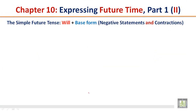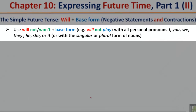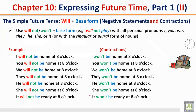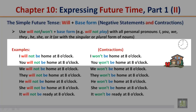The simple future tense: will plus base form — negative statements and contractions. Use 'will not' or 'won't' plus the base form with all personal pronouns: I, you, we, they, he, she, or it, or with the singular or plural form of nouns. Examples: I will not be home at 8 o'clock — I won't be home at 8 o'clock. You will not be home at 8 o'clock — you won't be home at 8 o'clock.